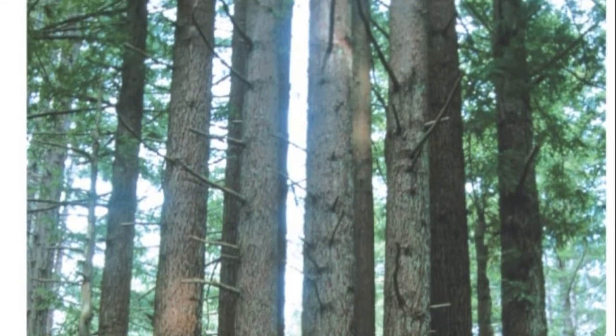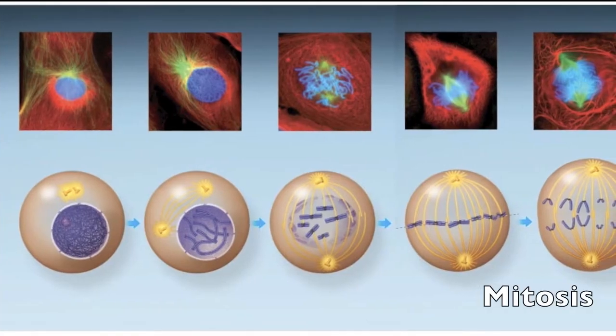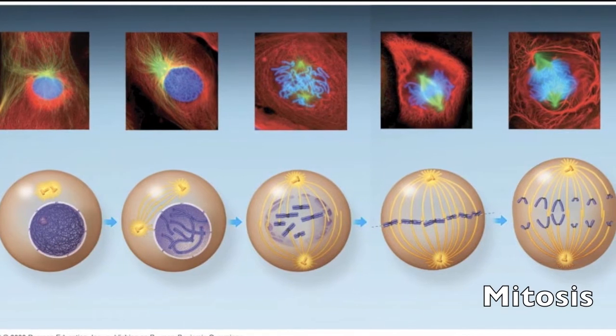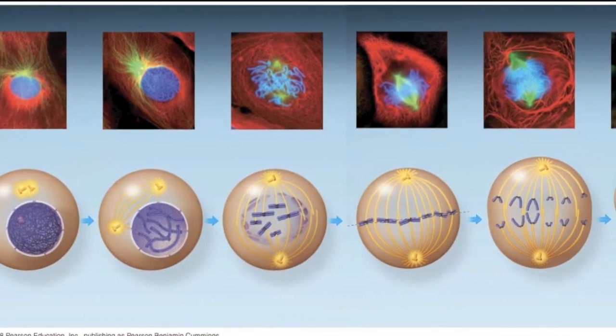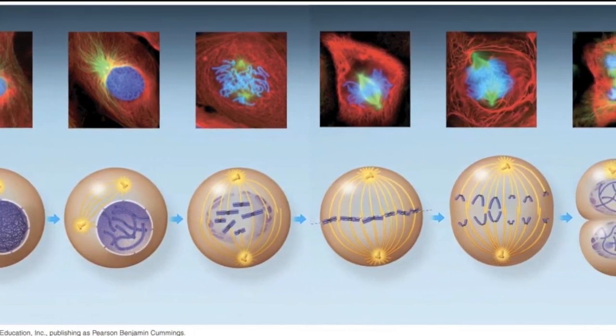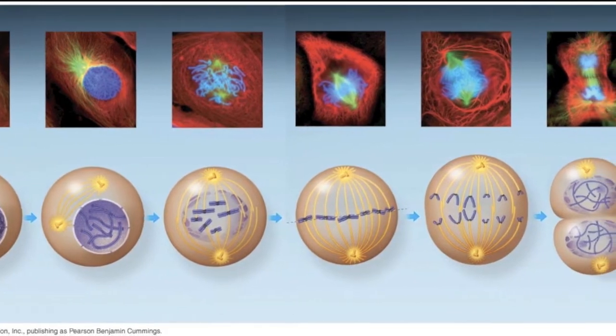Cell replication is unique to living things. Mitosis is the process of condensing DNA into chromosomes. During this stage, the two sets of DNA are divided equally into two new identical cells.